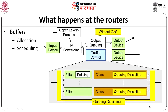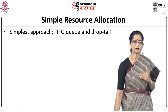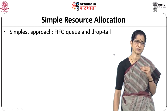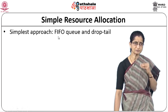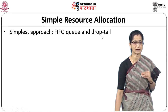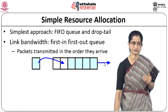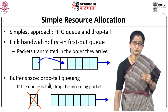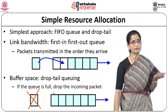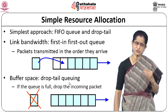Even without QoS, simple IP forwarding goes into output queuing. There are different queuing disciplines, and depending on the discipline, different quality of services can be implemented. The typical approach for resource allocation is a simple first-in first-out queue with what is called a drop-tail approach. You keep transmitting packets in the order they arrive, and when there is no buffer space, whatever is at the tail of the queue is dropped. When the queue is full, the incoming packet is dropped. This is the simple mechanism used in most routers.